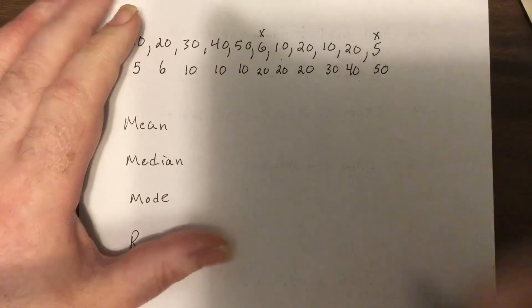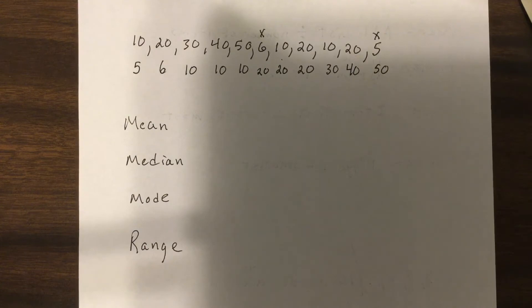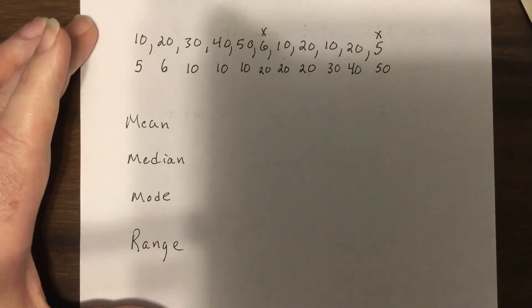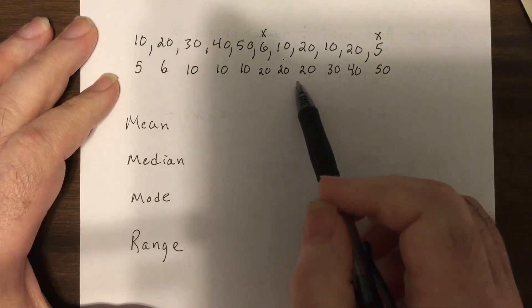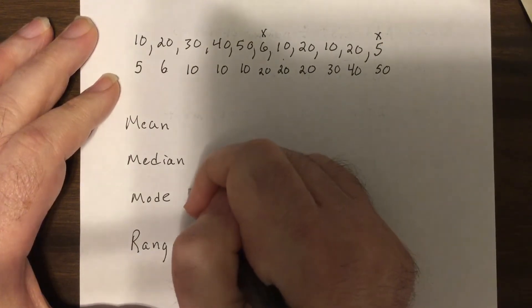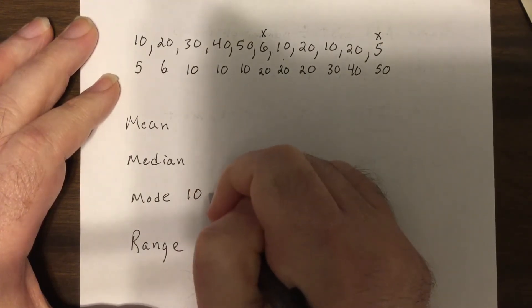Now use the calculator definitely, but right away I see the mode. There's actually two of them. There's three 10s and three 20s, so that's my mode: 10 or 20.